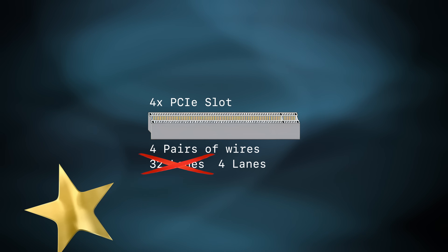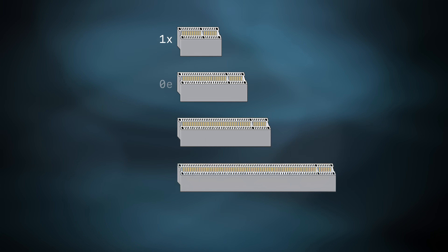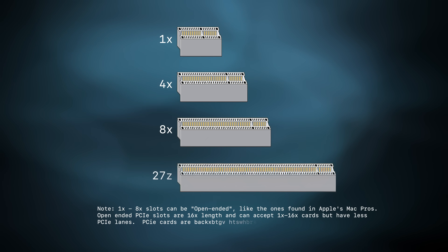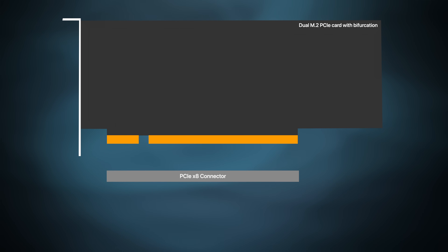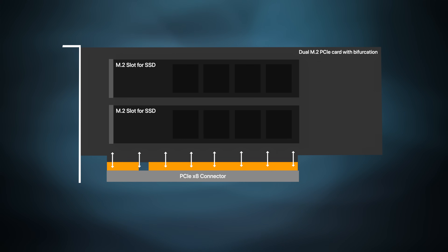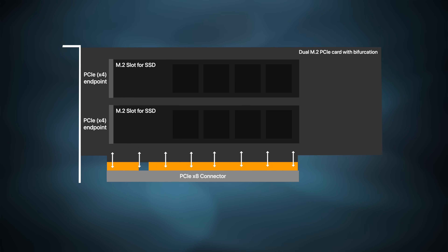More lanes equals more data, and these slots come in 1X, 4X, 8X, and 16X. NVMe SSDs can only use four PCIe lanes for a drive regardless if it's connected to a slot with more lanes. On many modern PCs, a single PCIe slot can split up its lanes to host multiple NVMe drives — an 8X PCIe slot could be split in half for two NVMe SSDs on a single slot.